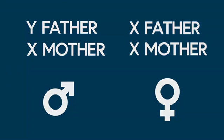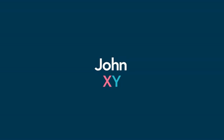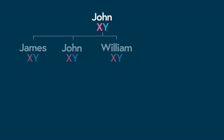Here is an illustration of how this works. John, since he is a male, carries an X and a Y chromosome. He has three sons — James, John, and William — who all inherit the Y chromosome from their father.